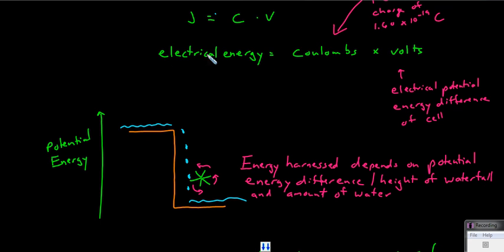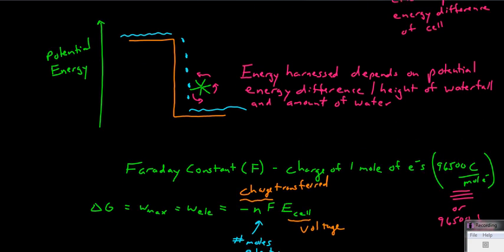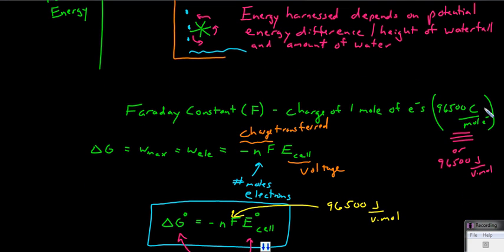We can take this equation, electrical energy equals coulombs times volts, and we can build another equation from that. But before I go into that, I'd like to introduce Faraday's constant, F. Faraday's constant is just the charge of one mole of electrons. So it's 96,500 coulombs per mole of electrons, or 96,500 joules per volt mole of electrons as well.